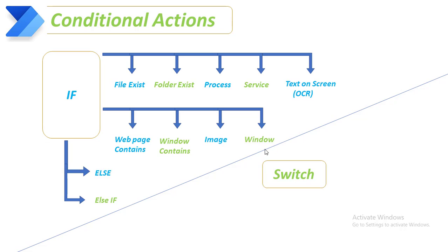Under the 'if' action, we have different types of conditional actions internally. One is 'if file exists', 'if folder exists', 'if process', 'if service', 'if text on screen', 'if web page contains', 'if window contains', 'if image', and 'if window'.